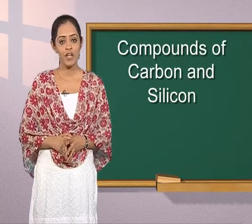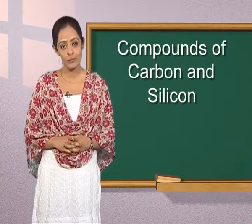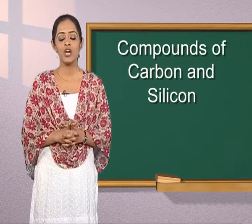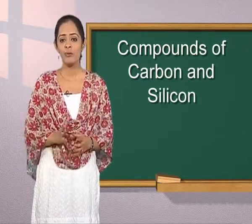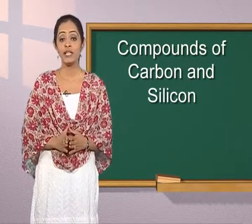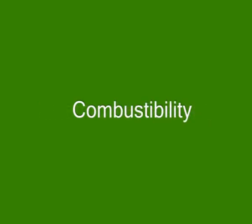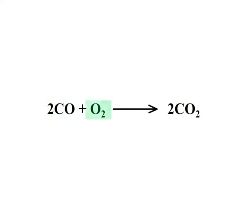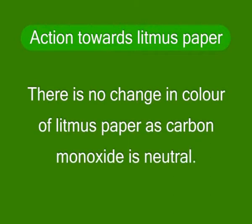Carbon monoxide is highly poisonous or toxic in nature. Its poisonous character is due to its tendency to combine with hemoglobin present in blood to form carboxyhemoglobin. It is a stable complex and is about 309 times more stable than the oxygen-hemoglobin complex. This prevents hemoglobin from carrying oxygen to different parts of the body, leading to suffocation and ultimately to death.